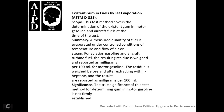Existent Gum in Fuel — ASTM D381. Scope: covers determination of existent gum in motor gasoline and aircraft fuels at the time of test. Summary: a measured quantity of fuel is evaporated under conditions of controlled temperature and flowing air stream; the resulting residue for aviation gasoline is weighed and reported in milligrams per 100 mL; for motor gasoline the residue is weighed before and after extraction with heptane and results reported in milligrams per 100 mL.